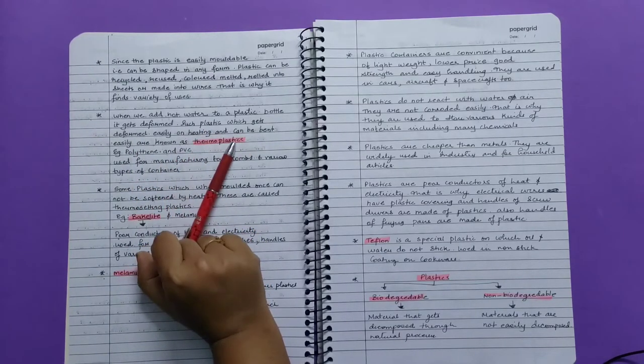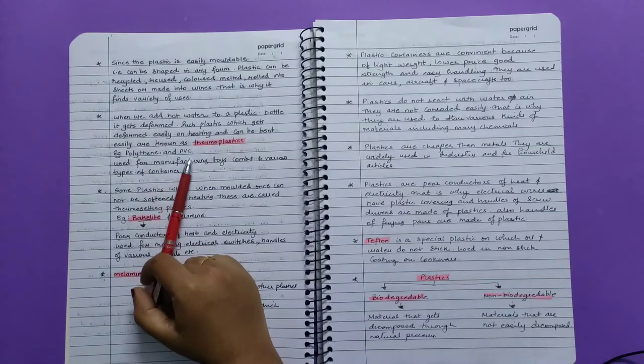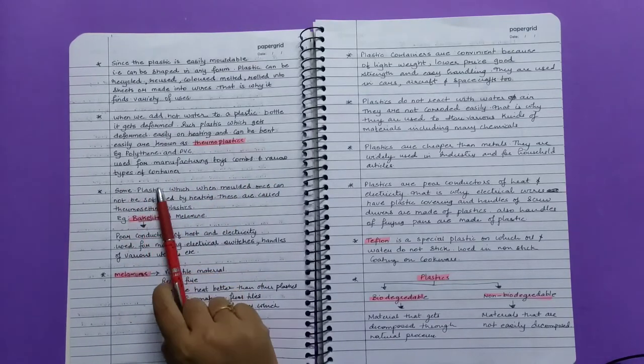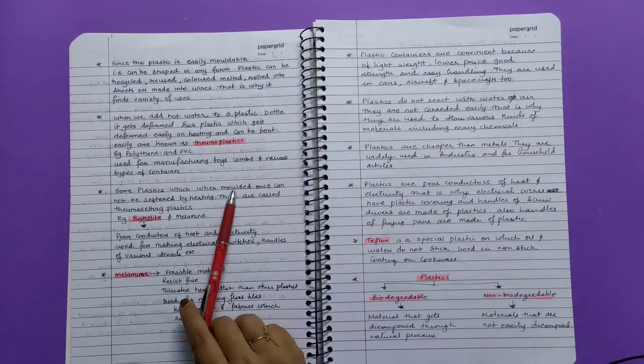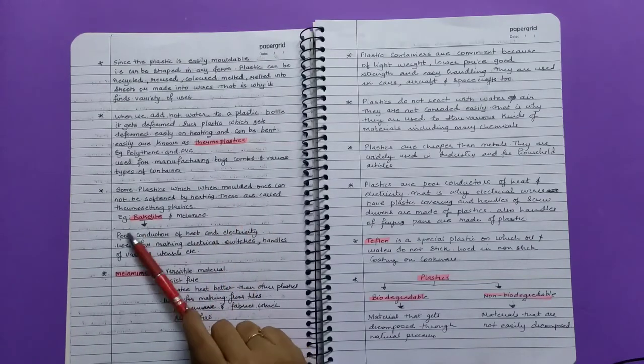Examples of thermoplastics are polyethylene and PVC, which are used for manufacturing toys, combs, and various types of containers. Some plastics, which when molded once cannot be softened by heating, are called thermosetting plastics.